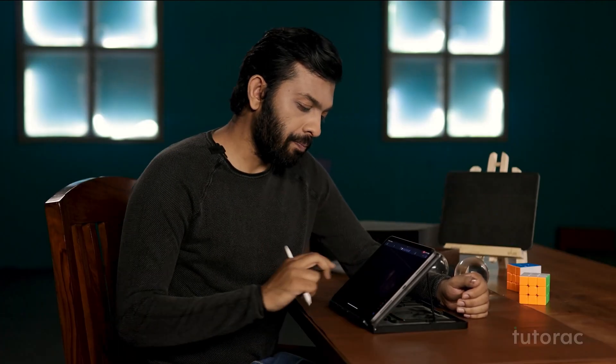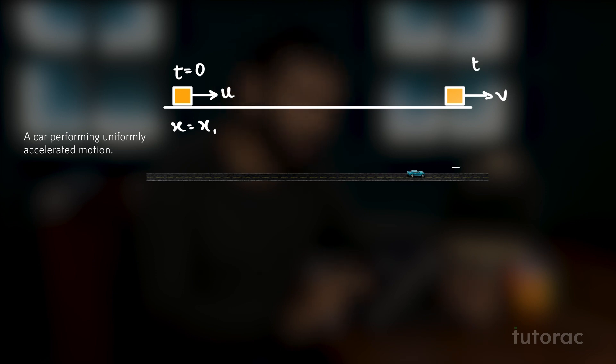Consider a situation where there is a block moving on a ground along the horizontal direction, initially with speed u. At time t equals to 0, the particle is at x equals to x1. After any time t, the velocity of the particle becomes v and its position changes to x equals to x2.